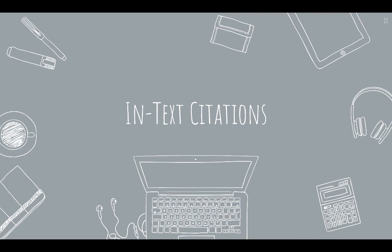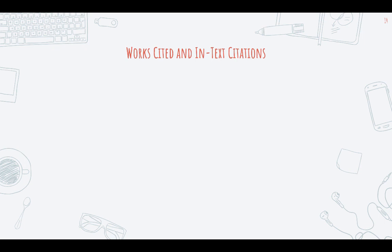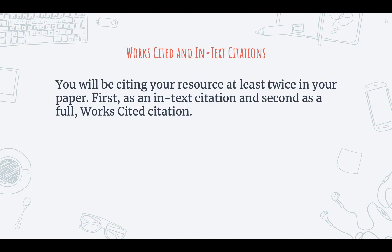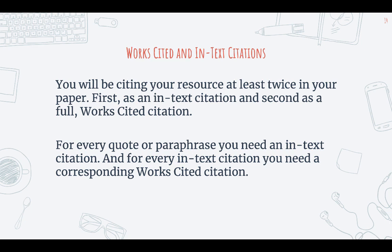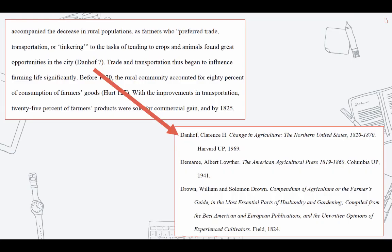So let's talk about the other aspect of MLA citations — the in-text citations. With MLA, you will always have two types of citation: the works cited citation and an in-text citation. You'll be citing your resource at least twice in your paper — first as an in-text citation, and second as a full works cited citation. For every quote or paraphrase, you need an in-text citation. For every in-text citation, you need a corresponding works cited citation. Here is an example of an in-text citation and its corresponding works cited citation from an example essay — we have the in-text citation of Danhoff 7 and the corresponding works cited citation, which is a lot longer — this is the full citation.